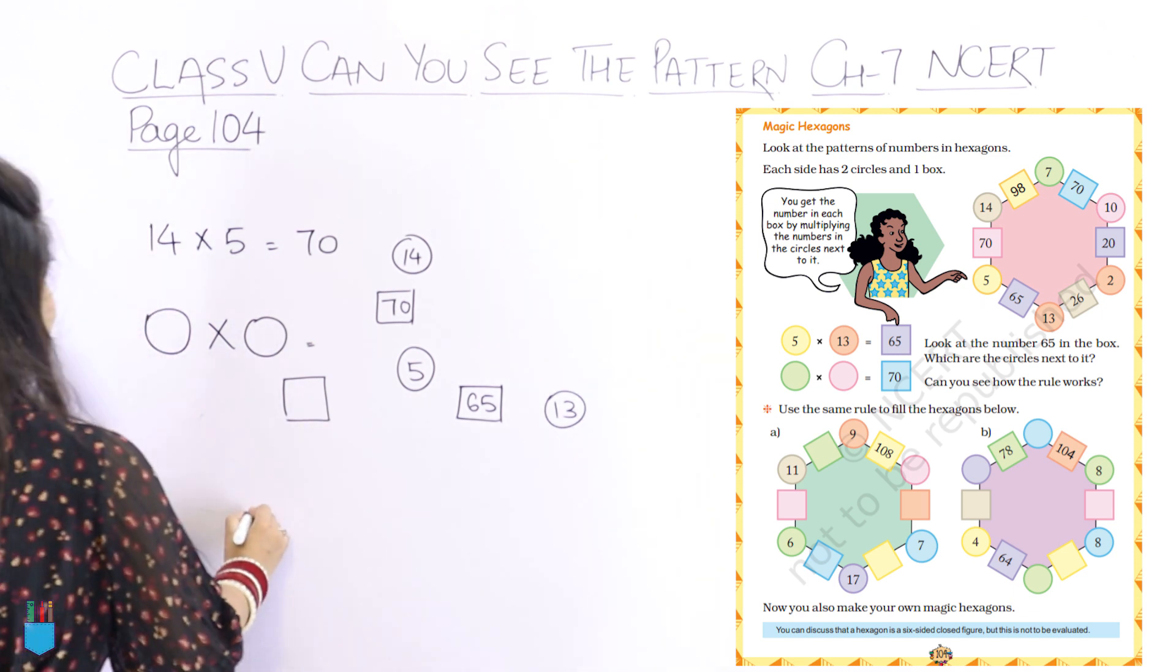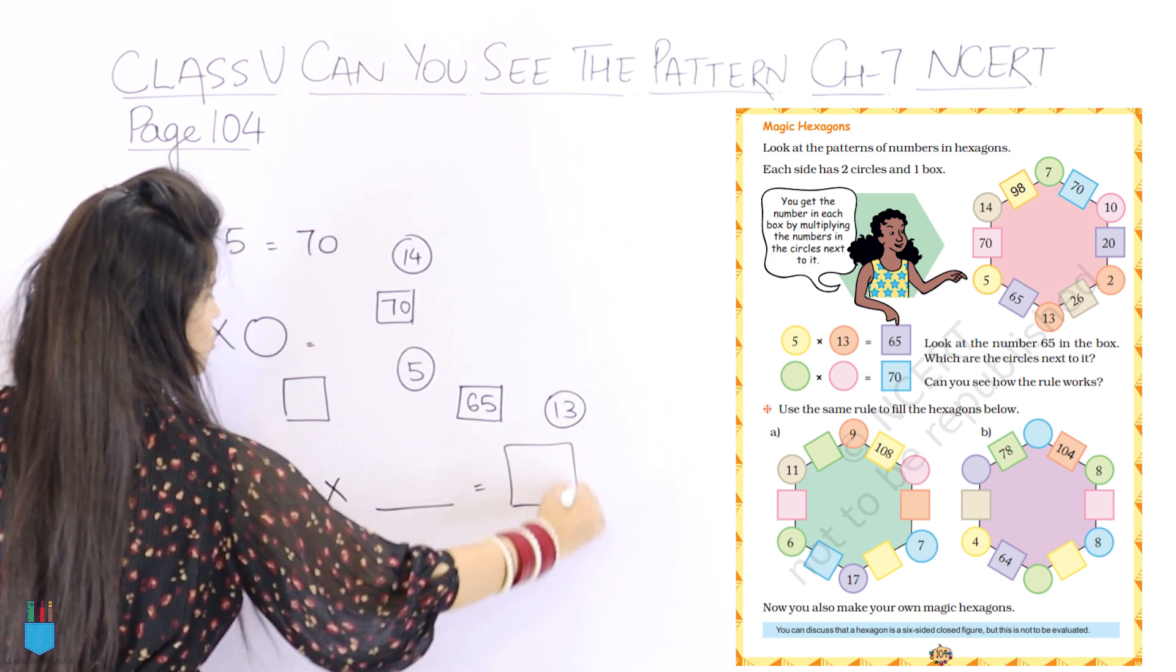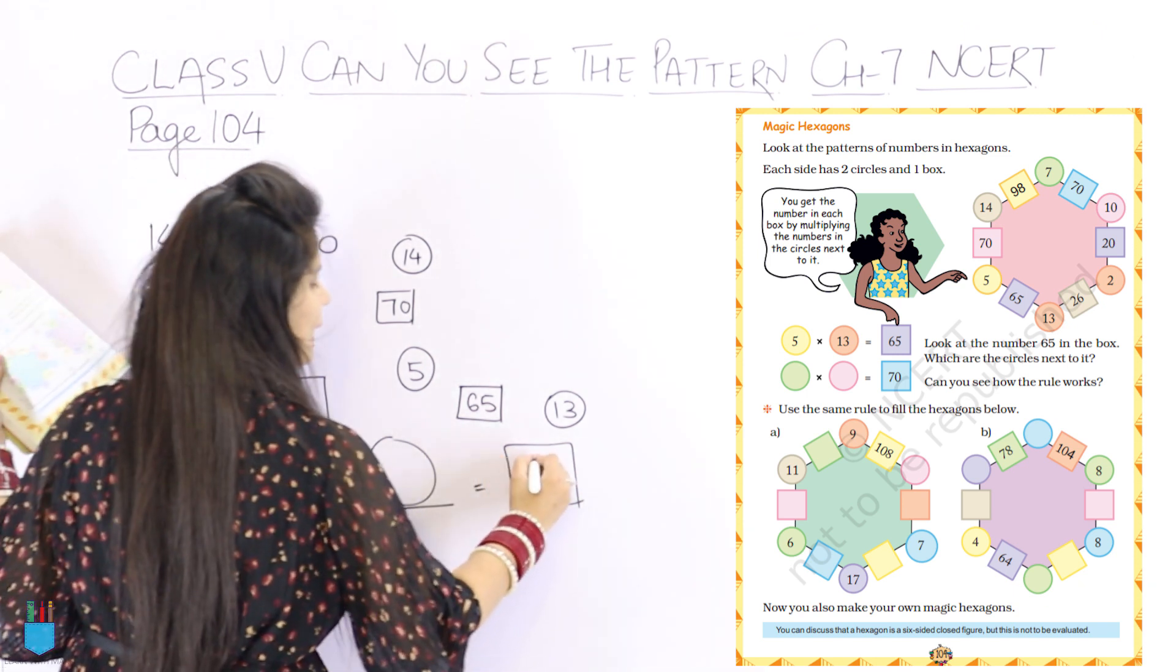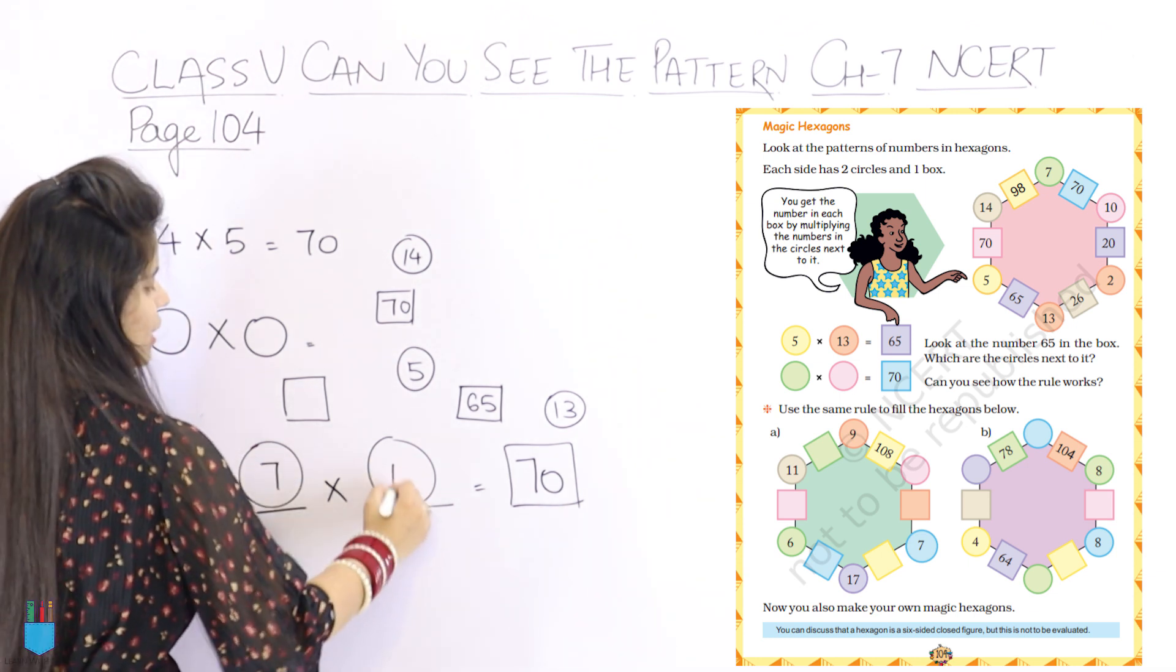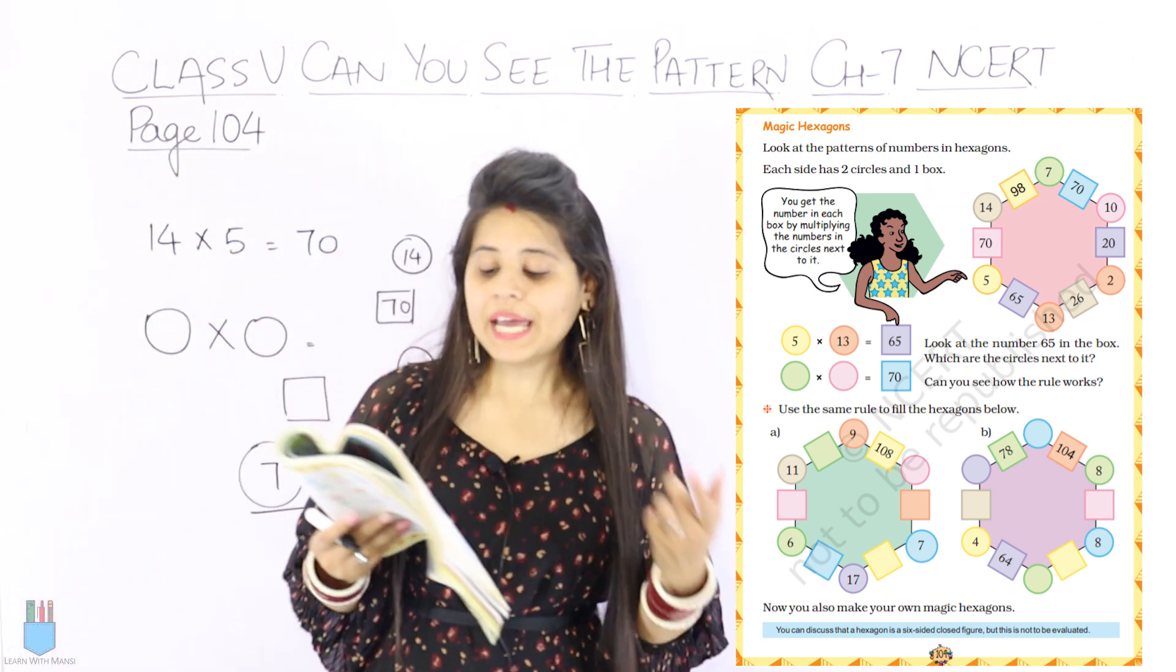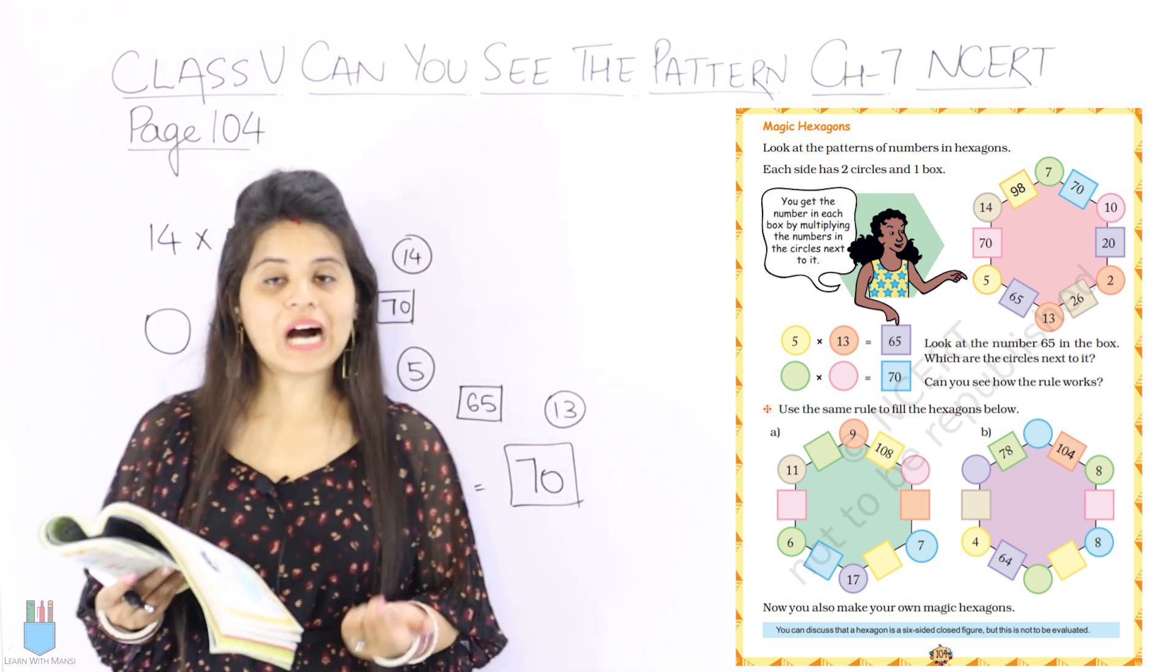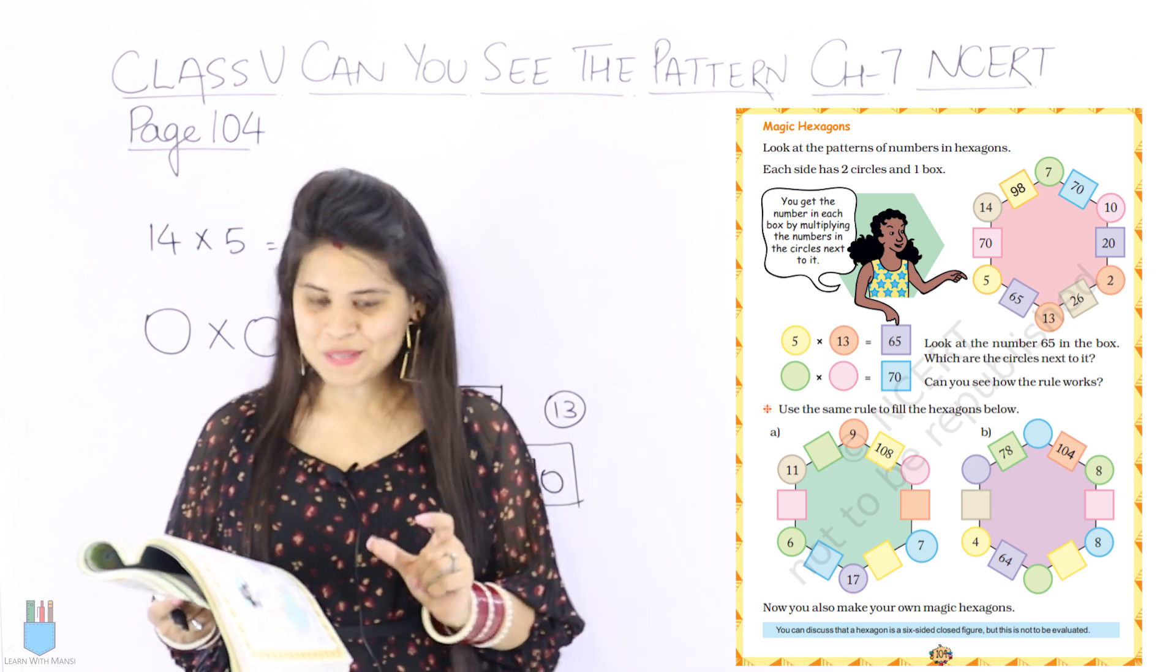Similarly, now one has given you dash into dash equals to dash. This is square, here are two circles. So which two numbers is multiplied by 70? We can see in our hexagon on the top, green is 7 and on the pink is 10, and multiply by 70 means 7 into 10 is 70. Now look at the number 65 in the box, which are the circles next to it? Then can you see how the rule works?